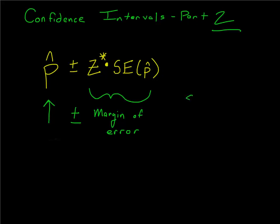Where do these numbers come from? The standard error is a lot like standard deviation. The standard error of the sample uses P-hat and Q-hat instead of P and Q, because we don't even know P and Q — that's what the confidence interval is trying to discover. Z-star represents how confident you want to be. A typical level is 95% confidence, which corresponds to Z* = 1.96 (more accurate than ±2). We talked about that in the previous video.